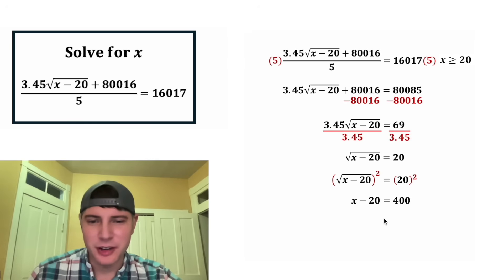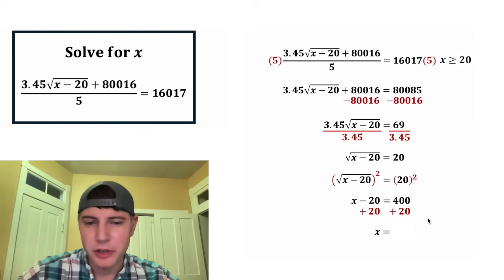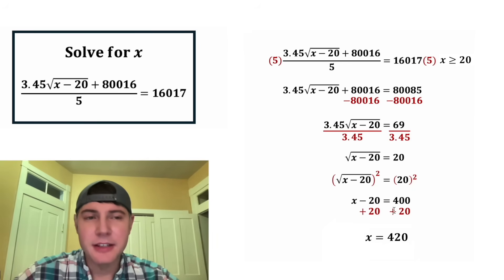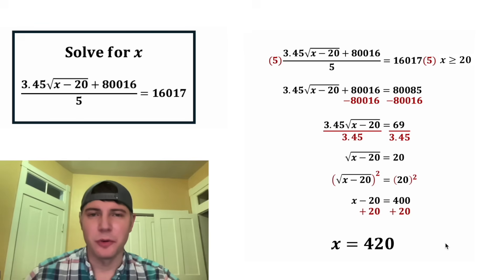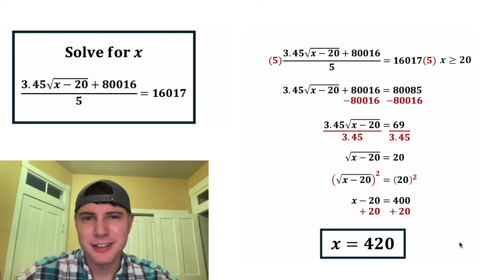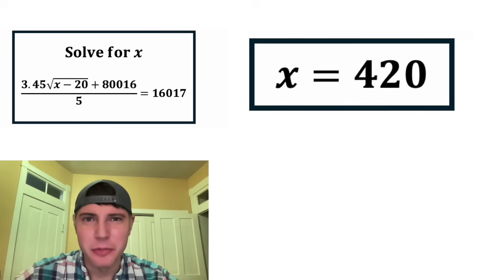And now to get the x all by itself, we can add 20 to both sides. On the left-hand side, we have x. And on the right-hand side, 400 plus 20 is 420. And that is the answer to our question. The solution to this equation is x equals 420. Let's put a box around it. How exciting. So this is a fun one to kick off our Algebra February calendar.